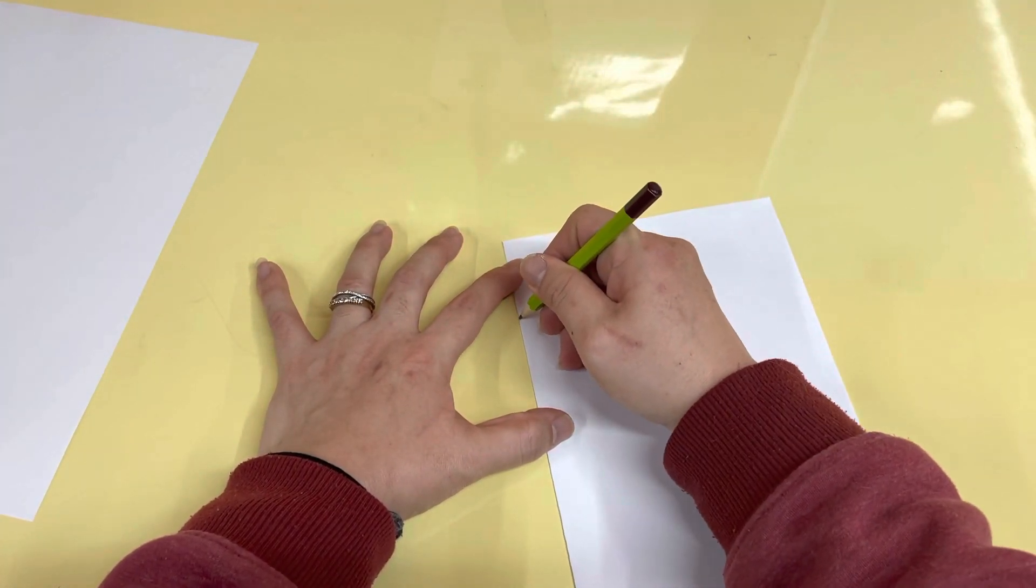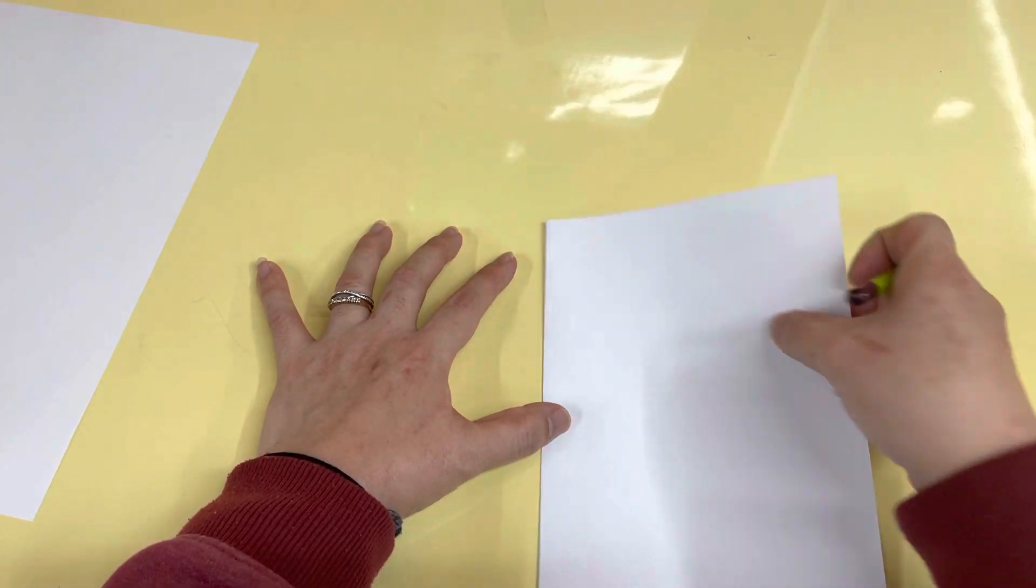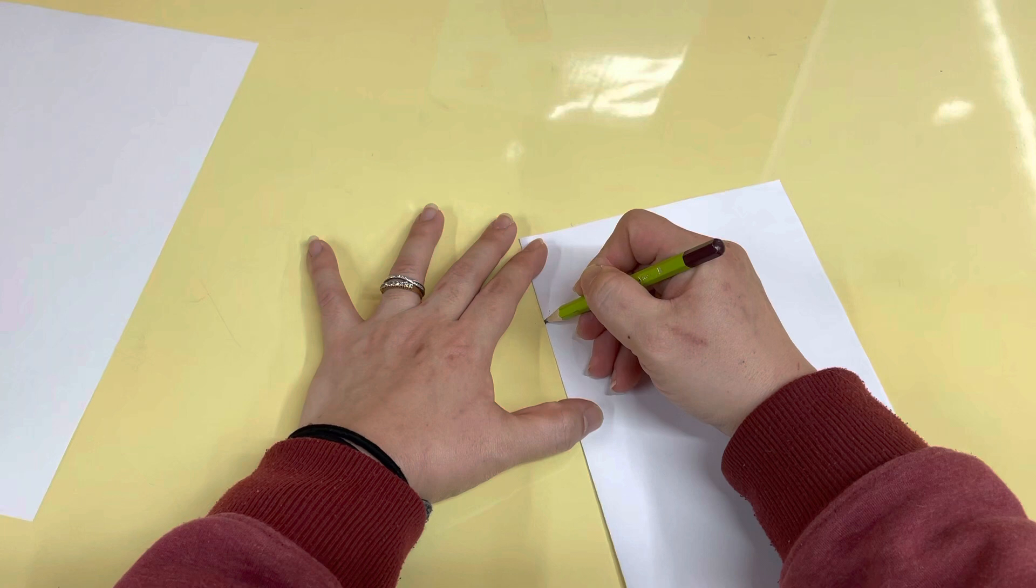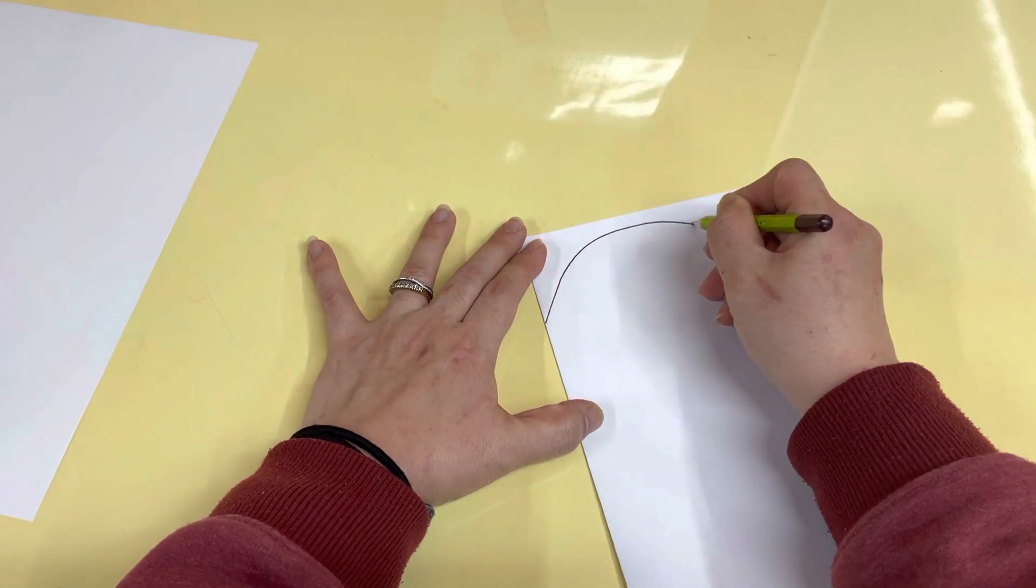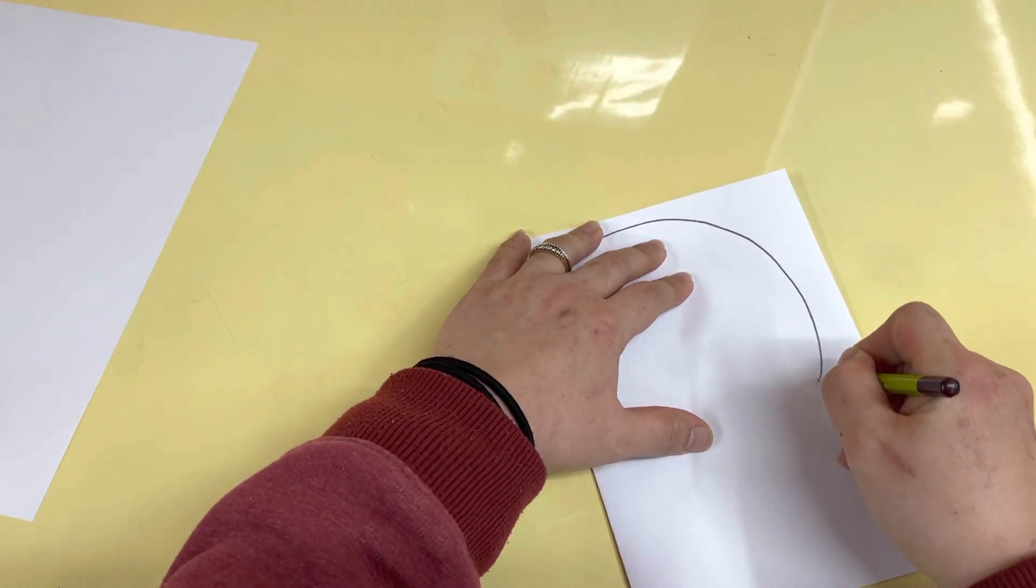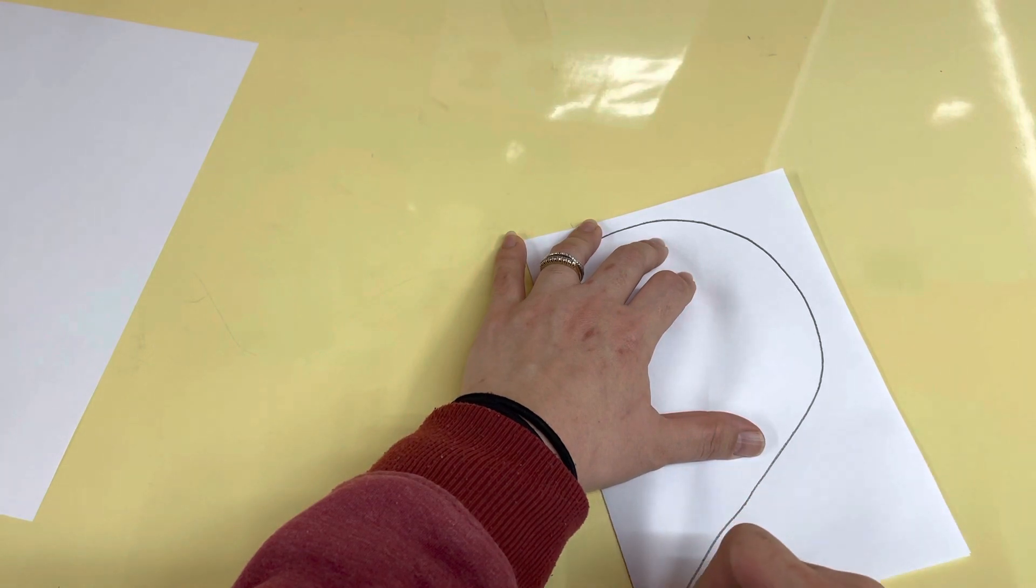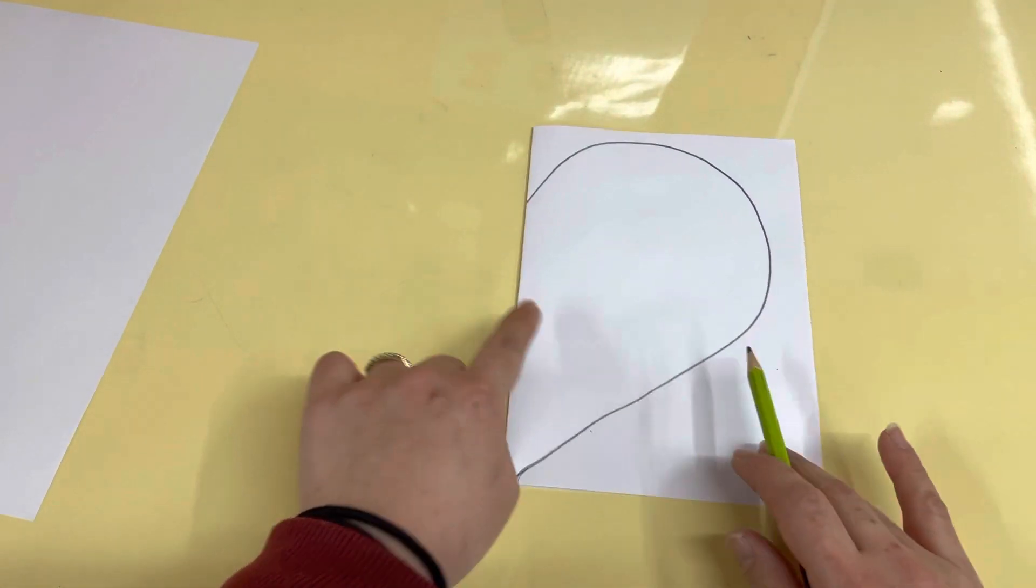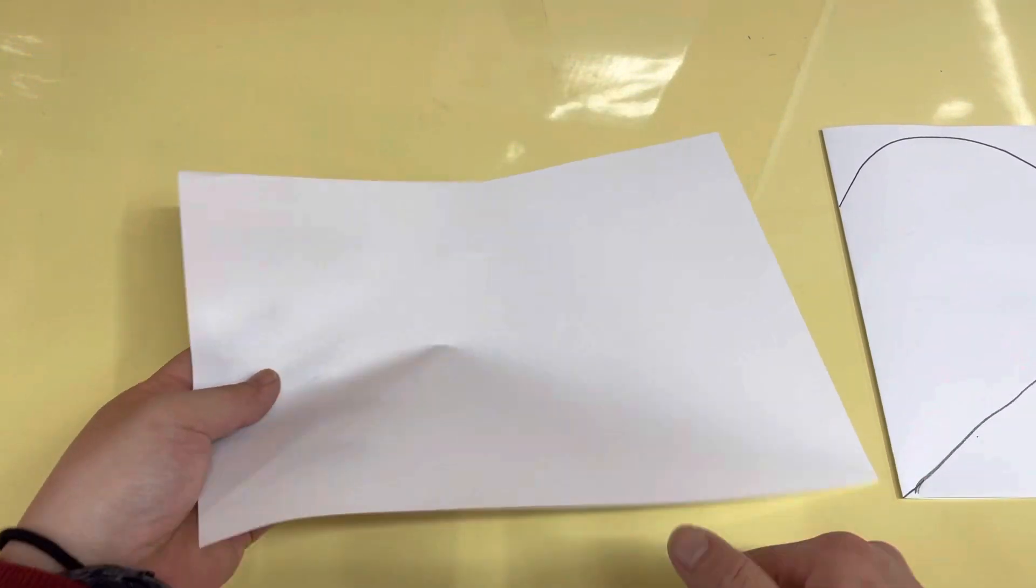Alright, okay. So on this paper you folded it, yes. And then draw half a heart. Here you go, half a heart. Okay, and then fold the other one.